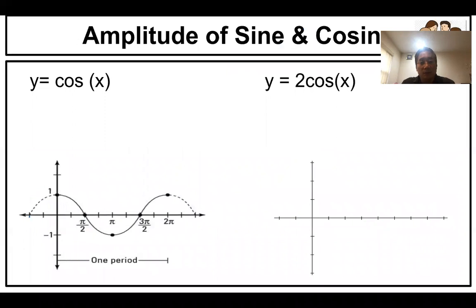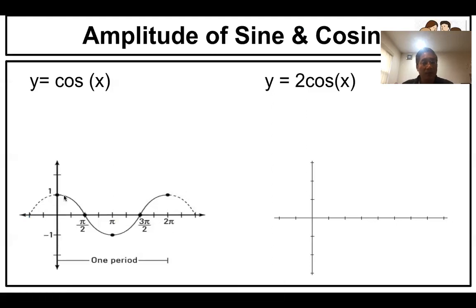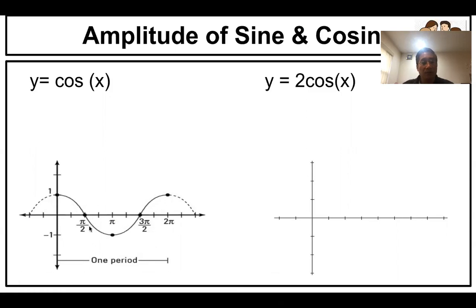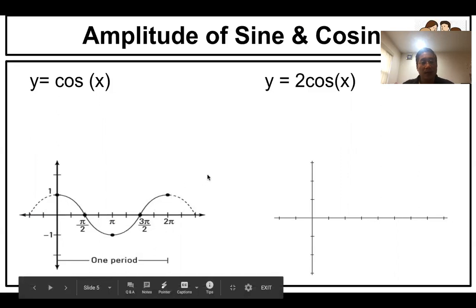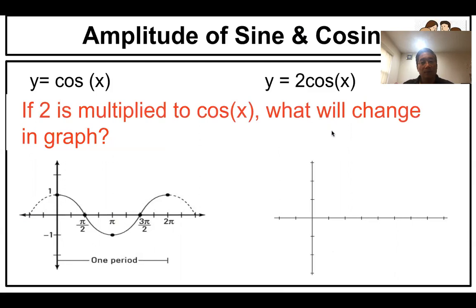And then now let's go to today's lesson: amplitude. It's simple, not difficult, right? So your graph looks like this, right? You should label probably. The domain is from zero to 2π. Sometimes it's one period. But period, don't worry about it. We are going to talk about it tomorrow. So one period from here to here, one cycle. But now, here you see y = cos(x). If two is multiplied to cos(x), what will change? Can you think about it?